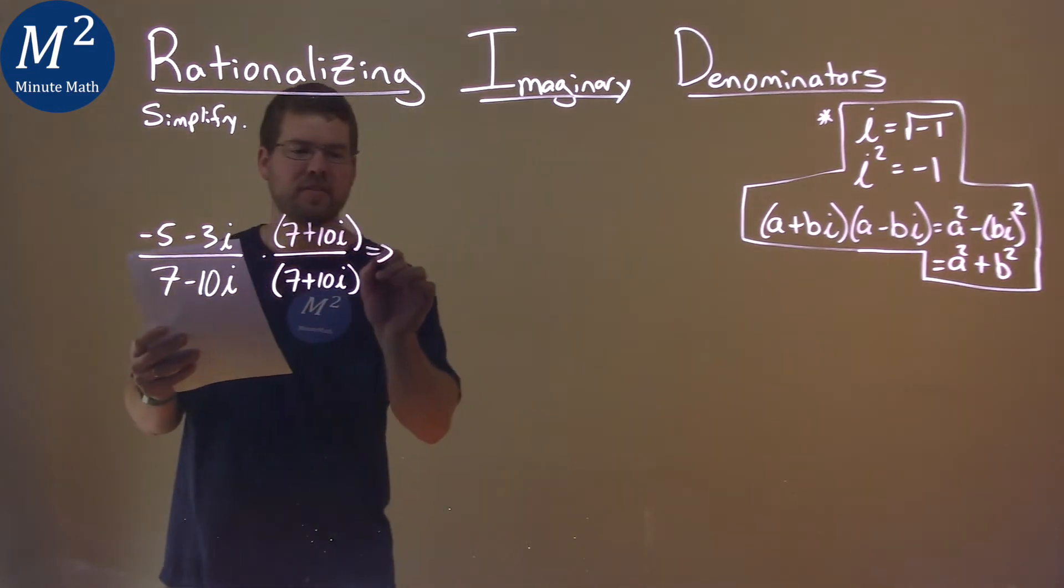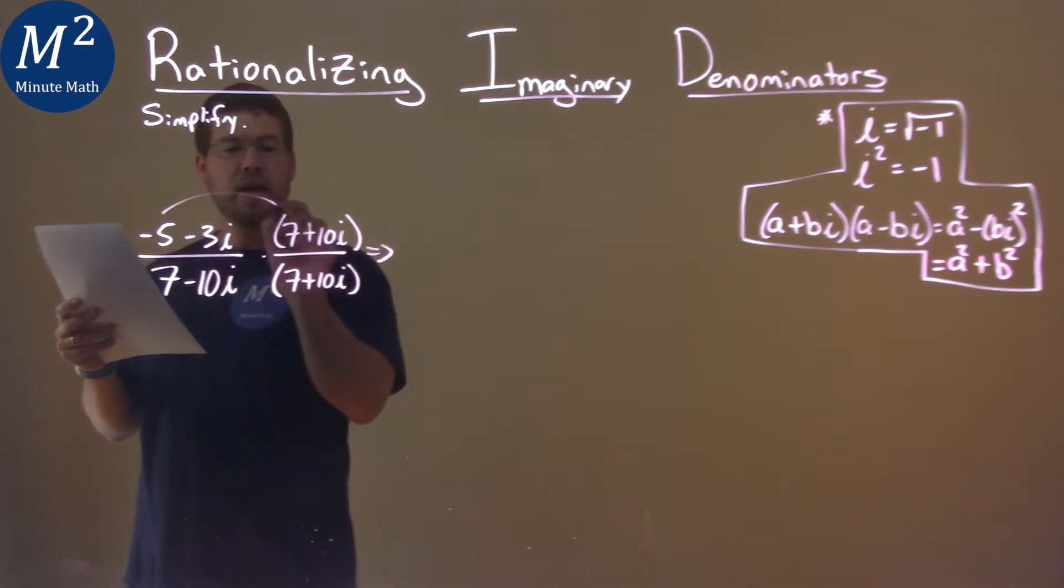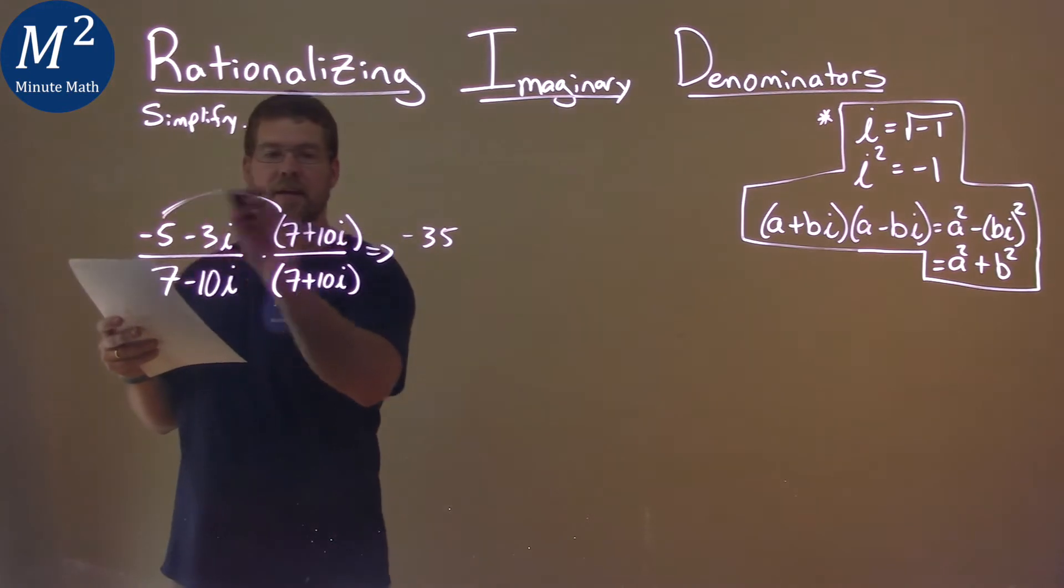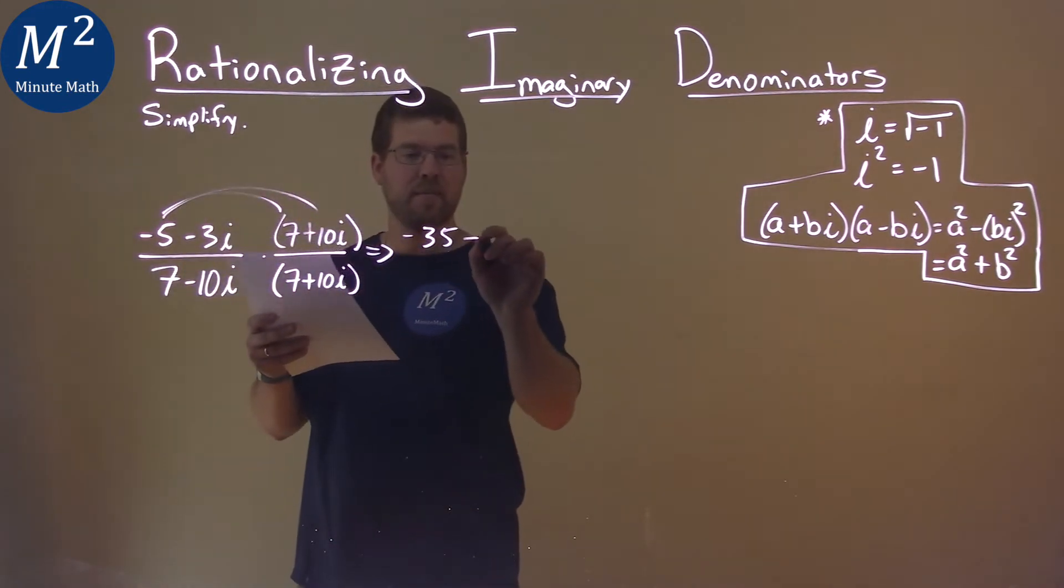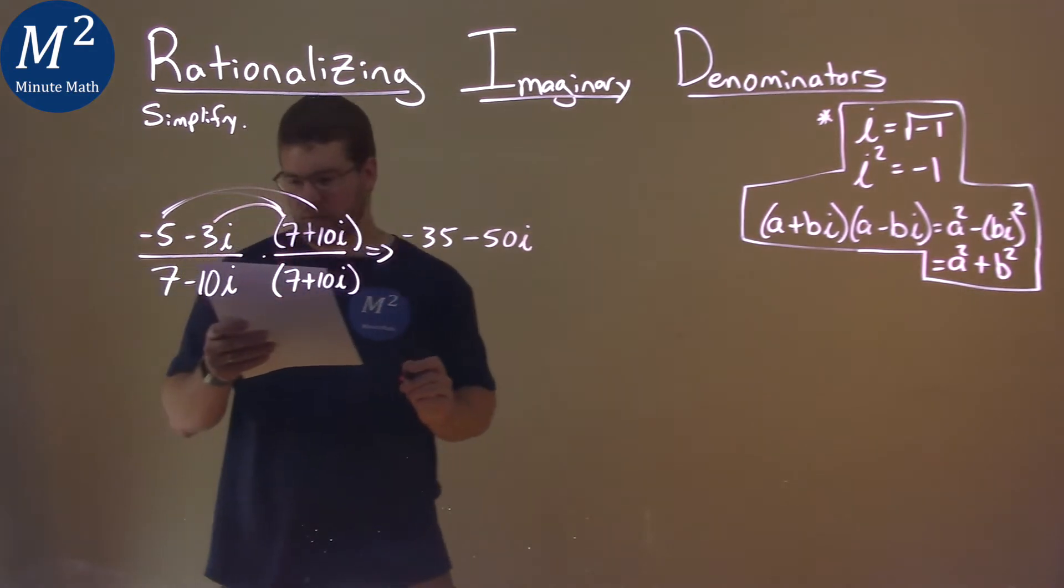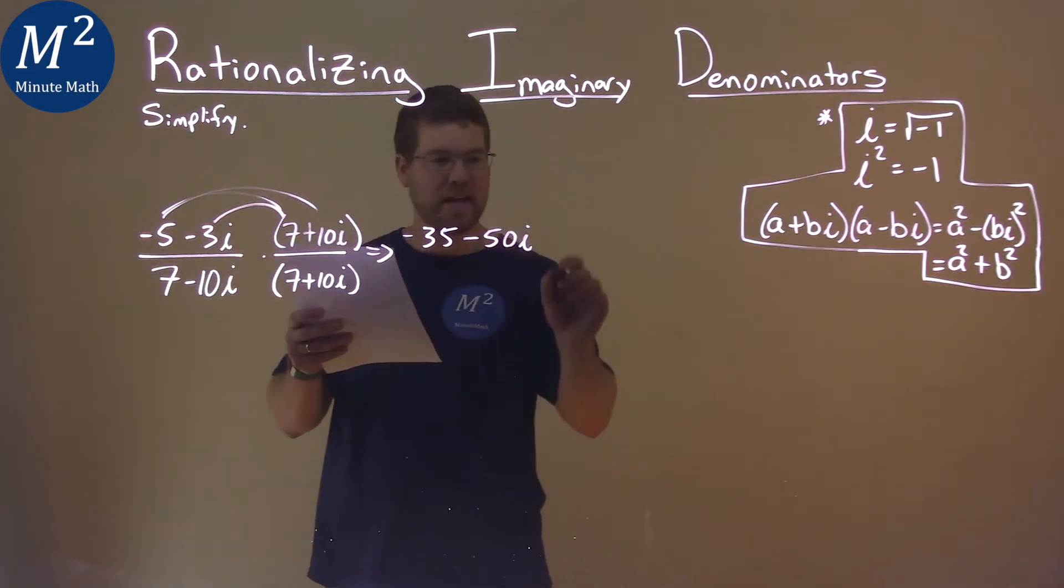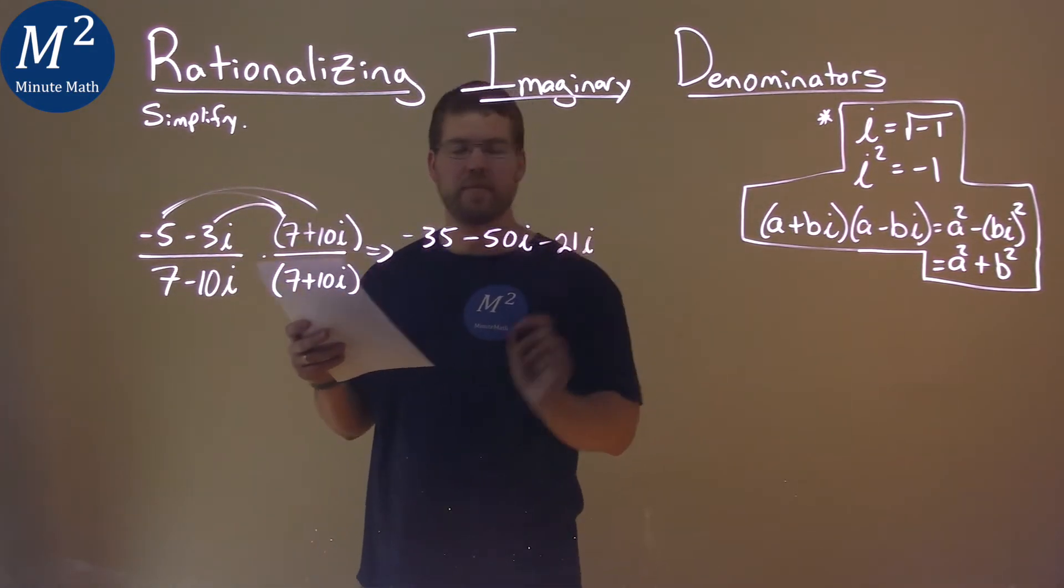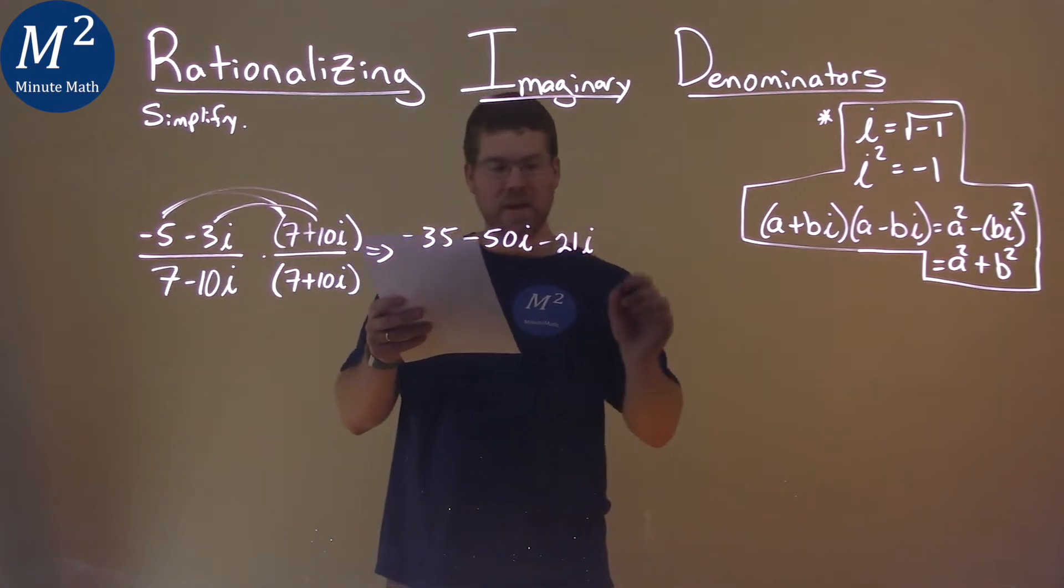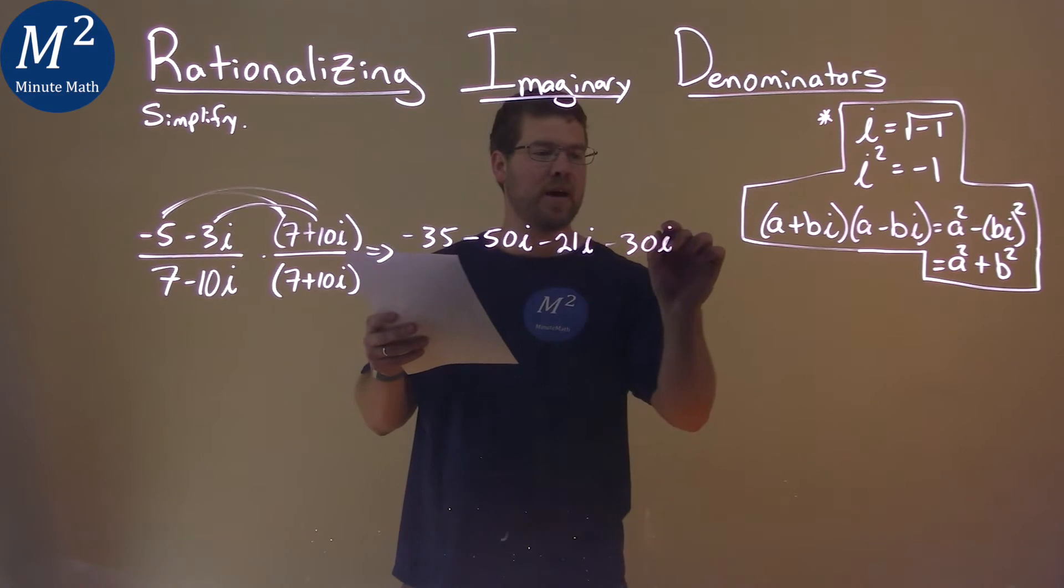So now we just have to simplify. Negative 5 times 7, we have negative 35. Negative 5 times 10i is minus 50i. Negative 3i times 7 is negative 21i. And negative 3i times 10i is negative 30i squared.